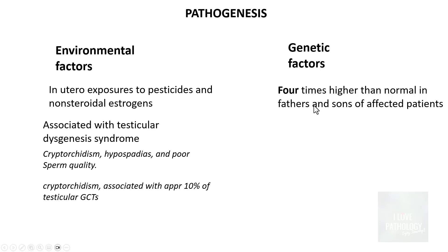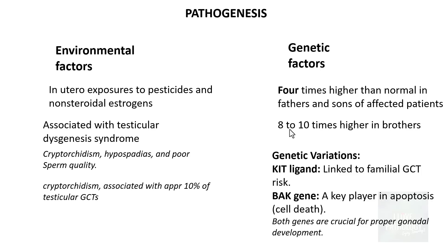Moving on to genetic factors, seminomas or germ cell tumors in general are four times higher than normal in fathers and sons of affected patients, and around 8 to 10 times higher if brothers are affected. The most important genetic variation is in the KIT gene, which is linked to familial germ cell tumor risk. The second important gene is the BAK gene, a key player in apoptosis. Both genes are crucial for proper gonadal development, and abnormalities in these genes are associated with the risk of germ cell tumors.